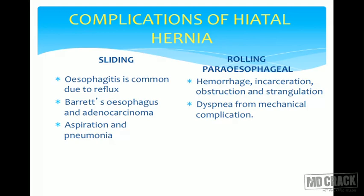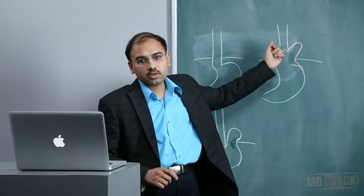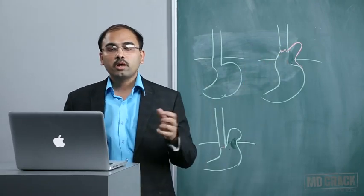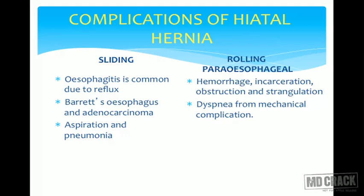Complications of hiatal hernia differ by type. In sliding hiatal hernia, esophagitis is common due to reflux caused by migration of the cardioesophageal junction. Barrett's esophagus and its sequelae, including adenocarcinoma, are also common in sliding hernia due to associated reflux. In rolling paraesophageal hernia, hemorrhage, incarceration, obstruction, and strangulation are more common due to constriction of the herniated stomach.